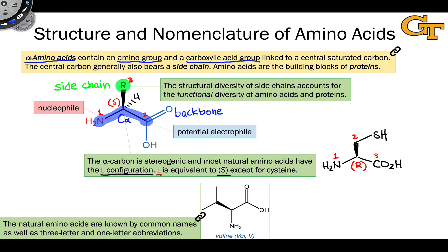The amino acids, like the carbohydrates, are generally known by common names, but we also abbreviate them using three-letter and one-letter abbreviations, particularly when talking about a sequence of amino acids within a long polypeptide chain. For example, the amino acid valine has the side chain shown here — it always looks like a V — and valine is also denoted using the three-letter abbreviation VAL and the one-letter abbreviation V.